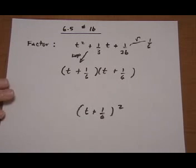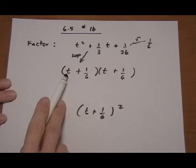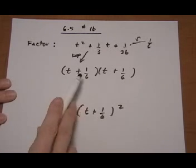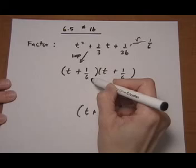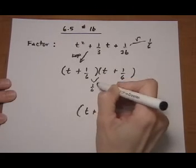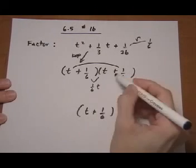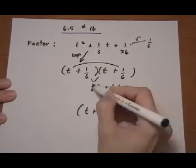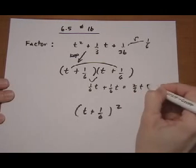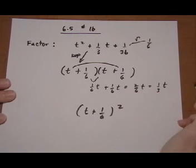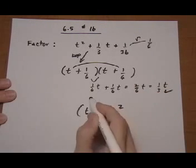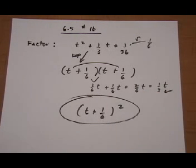So on that last one we did, we should have shown it like that too. So now I double check the middle term to see if I'm getting the right middle. So I'm getting 1 sixth t plus 1 sixth t equals 2 sixth t which is reduced to 1 third t. Yep, the middle works. So that would be my final answer.